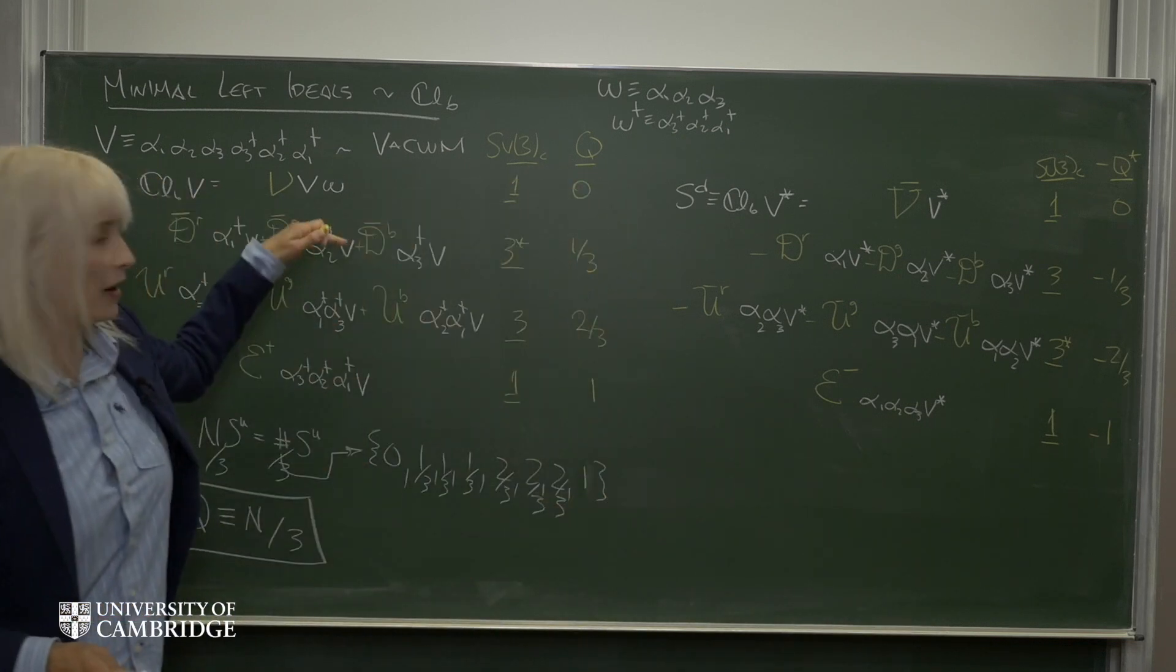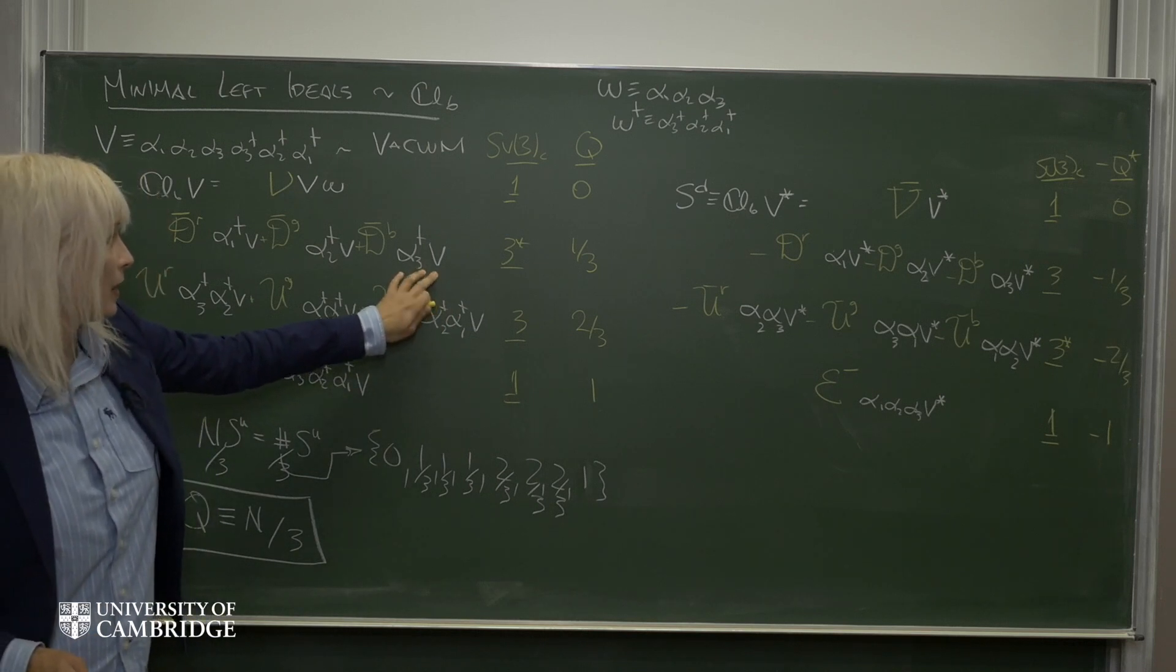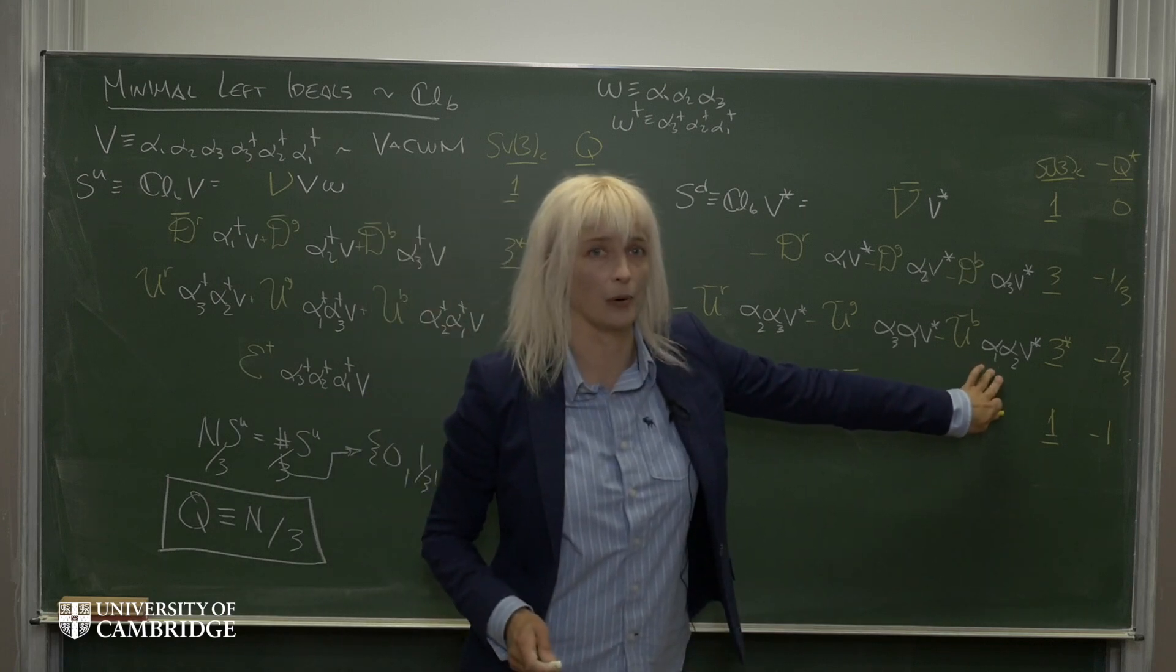And this works for every isospin pair. For example, if I right-multiply the basis vector by omega for the anti-down quark, I would find that this gives me the basis vector for the anti-up quark.